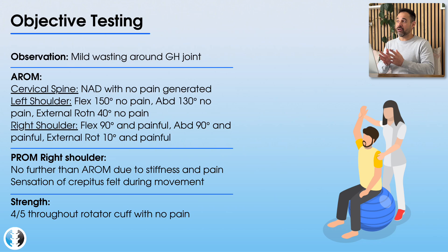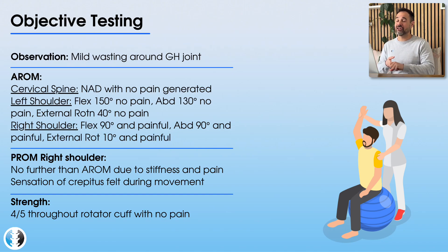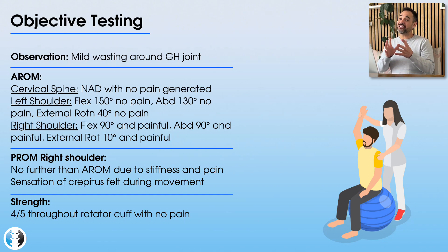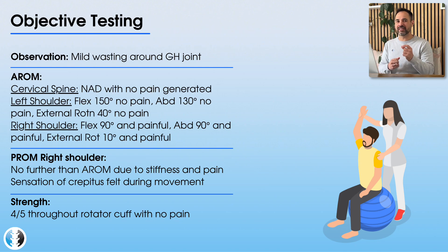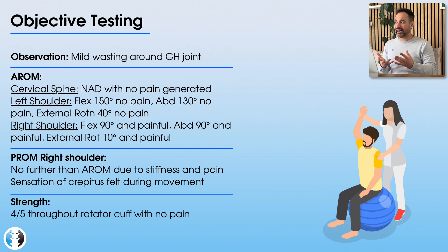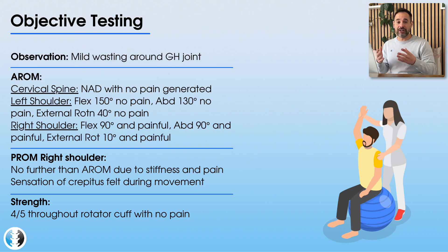However, looking at the right shoulder with active range of movement, it's a different story — only 90 degrees of flexion and abduction and only 10 degrees of external rotation, all of which are quite sore and irritable. Comparing to passive range of movement, there's no difference in range, but there is a feeling of stiffness and a sensation of crepitus during movement. Resisted tests show no pain on rotator cuff strength testing, with a small reduction in strength at 4/5 on the Oxford scale for both internal and external rotation, but again, no pain.